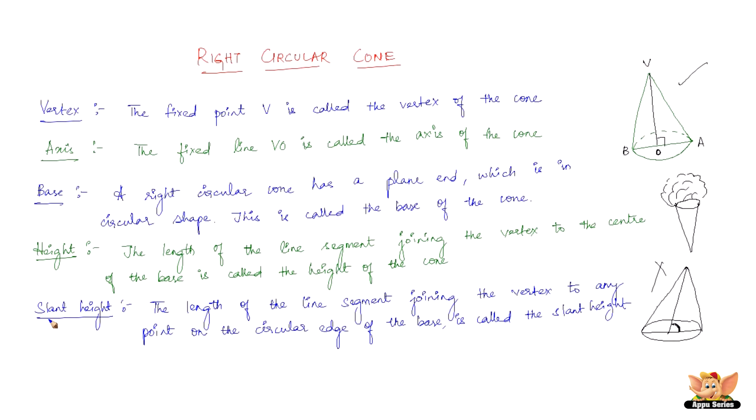The next point is slant height. The slant height is the length of the line segment joining the vertex to any point on the circular edge. In this case it is A and B, so these two are the slant heights.